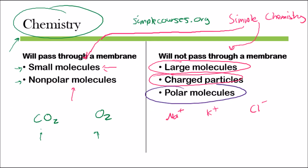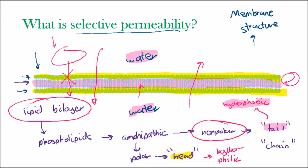Polar molecules also can't pass through the membrane. A big example of this is water, H2O, which is a polar molecule. Water cannot pass through the membrane because we have the hydrophobic region in the middle — and since that region is non-polar and water is polar, they don't mix well. So a water molecule will be stopped and pushed back out.